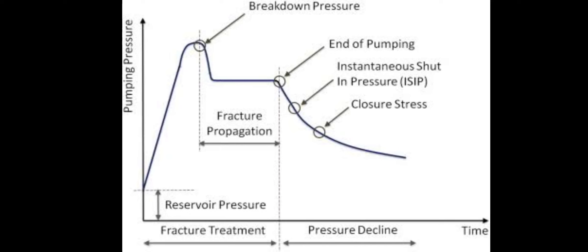The pressure reduces to a certain level and then propagates along a near-horizontal line, which represents fracture propagation. During this phase, pressure is almost constant because of the fracture. At the end of the fracture propagation line, we stop injecting fluid and shut down the pump.